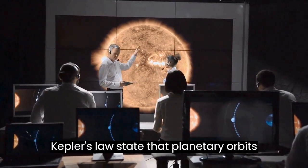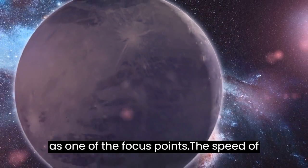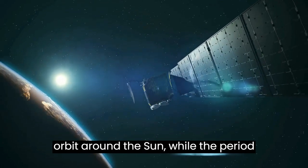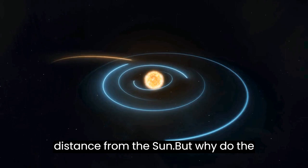Kepler's laws state that planetary orbits follow an elliptical shape with the sun as one of the focus points. The speed of the planets also varies during their orbit around the sun, while the period of a planet's orbit is related to its distance from the sun.